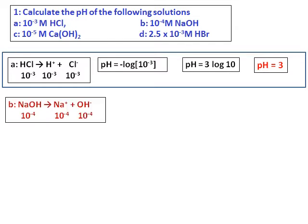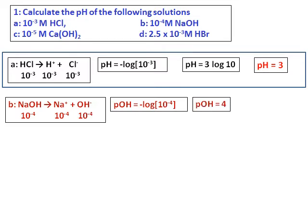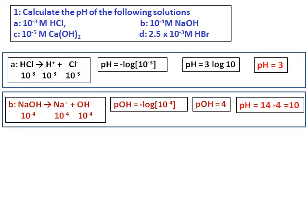For NaOH also, same as HCl, being a strong base, it ionizes completely. Since this gives me the hydroxyl ion concentration, I will get the value of pOH and convert the pOH into pH as 10.